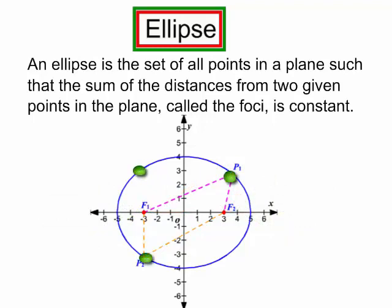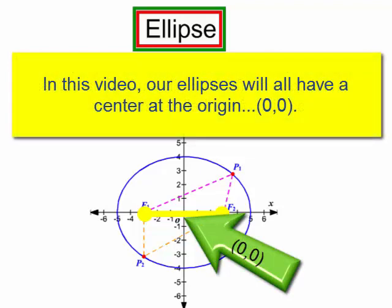Now, the center of the ellipse is the midpoint of the line segment joining its foci. In our video, all of our ellipse will have a center at the origin, (0, 0).